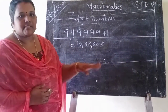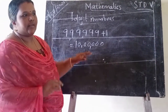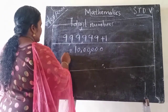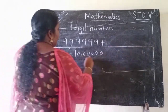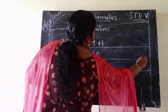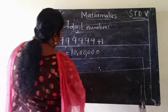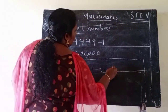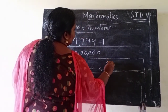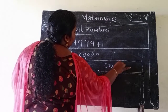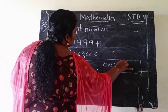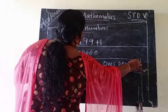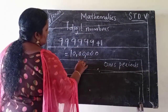Next, how can we represent this number in a placement chart? Look at the board. We draw a placement chart. There are 3 periods.